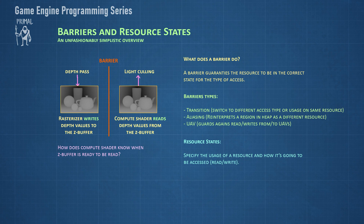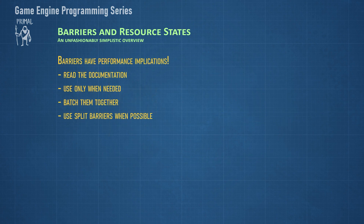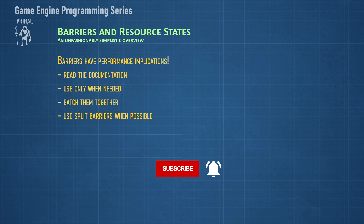The last type of barrier is the UAV barrier, which synchronizes reading from and writing to unordered access resources. To wrap this up, remember that using barriers has performance implications. To use them effectively, read the documentation and other good resources. Use barriers only when needed, and apply barriers together when you can — that way the GPU has more information to do optimizations. Use split barriers: a split barrier consists of a hint to the GPU that a resource is about to be transitioned before really setting the barrier. I'm going to use split barriers in the next episode, so subscribe to stay tuned.